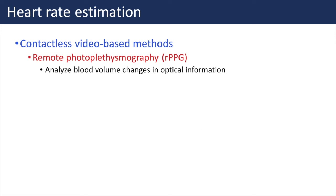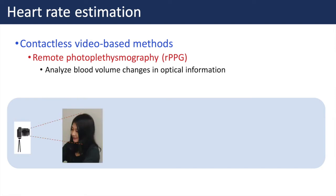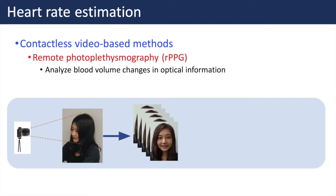Later on, a number of contactless video-based methods have been developed. Among these methods, Remote Photoplethysmography, or RPPG, has attracted numerous attention. RPPG is extracted by analyzing blood volume changes in optical information. Here, we propose using face regions, and we can detect heart rate through Fourier transformation.